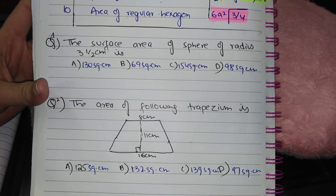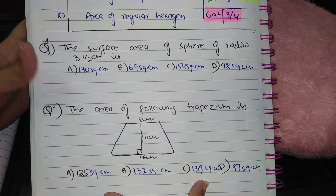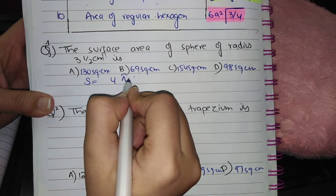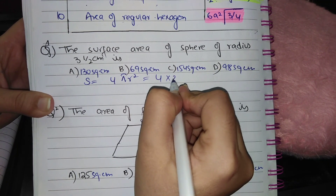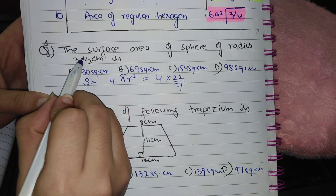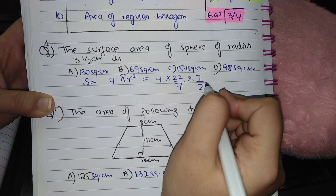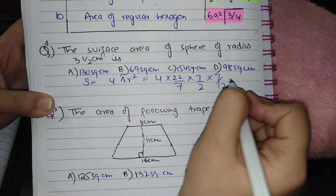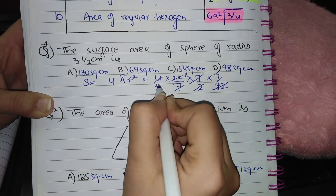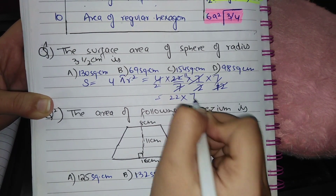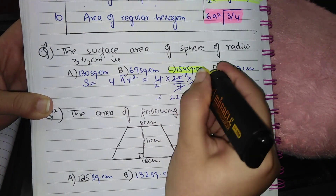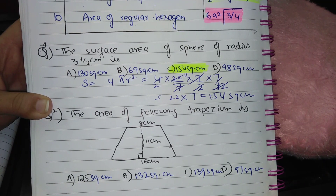Question 1: Find the surface area of a sphere of radius 3½ cm. Surface area formula is 4πr². Here r = 3½ = 7/2. So: 4 × (22/7) × (7/2)² = 4 × (22/7) × (49/4). Cancelling terms, 7 with 7 and 2 with 2, we get 11 × 2 × 7 = 154 cm². The correct option is C: 154 square centimeters.